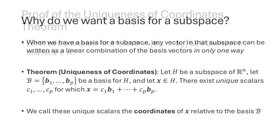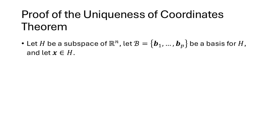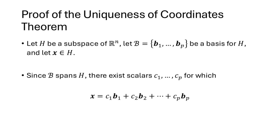Let's walk through the proof of this theorem. We start with a subspace of R^n, script B containing vectors b1 through bp being a basis for H, and x being a generic vector in H. Since B is a basis for H, it spans H, which means every vector in H can be written as a linear combination of the b vectors. Let scalars c1 through cp be the scalars that write x as a linear combination of the b vectors.